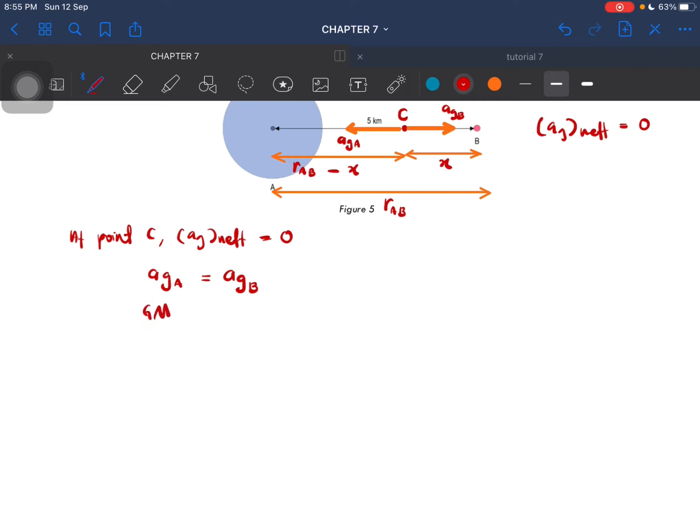So now this is GM_A over R squared, GM_B over R squared. So the R here is GM_A over R_AB minus X equal to GM_B over X. So we have to find the value of X.